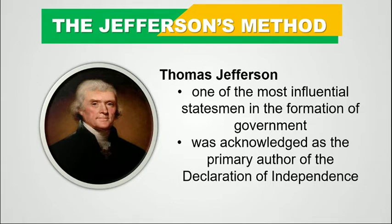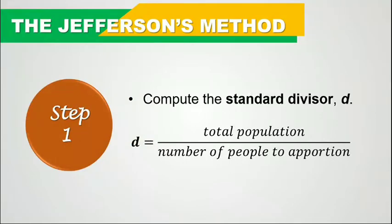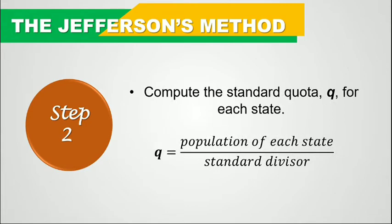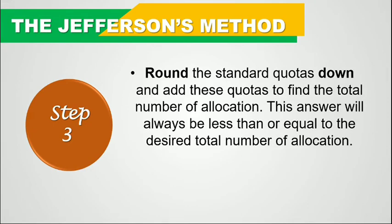What are the steps of the Jefferson's method? The steps of the Jefferson's method are similar to the Hamilton's method. First, we have to compute the standard divisor by dividing the total population by the number of people to apportion. The second step is to compute the standard quota for each state by dividing the population of each state by the standard divisor. The third step is to round the standard quotas down and add these quotas to find the total number of allocation. This answer will always be less than or equal to the desired total number of allocation.